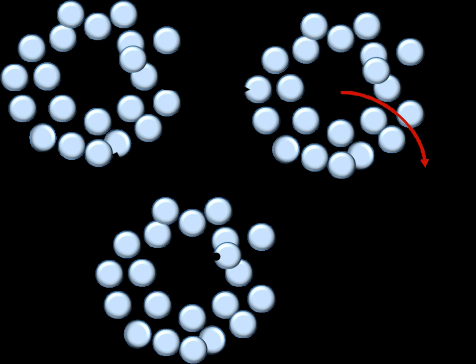radicals formed from the decomposition of an initiator molecule are surrounded by a cage consisting of solvent and/or monomer molecules.